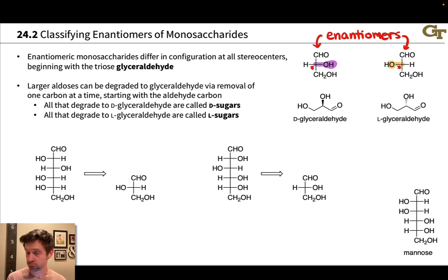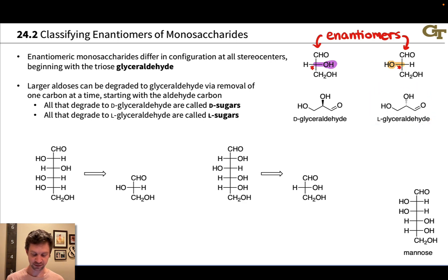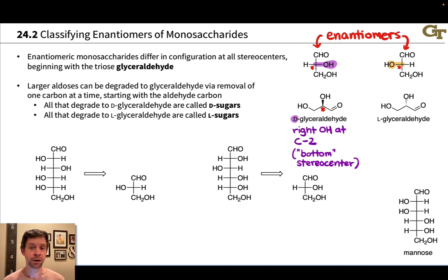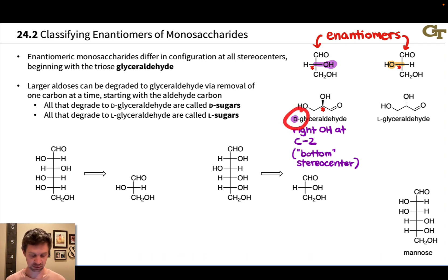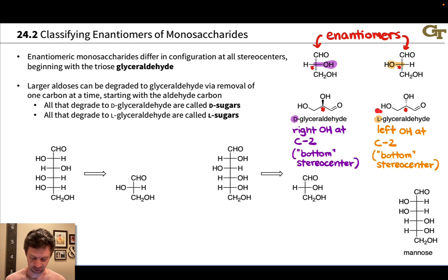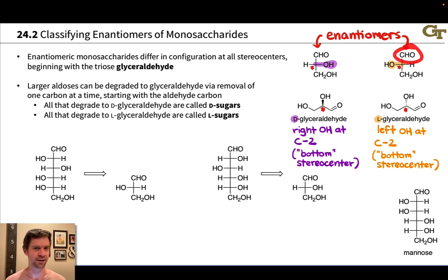If we convert each of these into a line angle drawing, we get the picture you see at the bottom. Here's D-glyceraldehyde in a wedge-dash drawing, and here's L-glyceraldehyde. The configuration at that key stereogenic carbon is different. The enantiomer with the OH group pointing to the right of that stereogenic carbon in glyceraldehyde is called D-glyceraldehyde, and the enantiomer in which that hydroxyl group points to the left is known as L-glyceraldehyde. This is just a convention — the way I always like to remember it is L to the left. By convention, we put the aldehyde at the top in the Fischer projection.